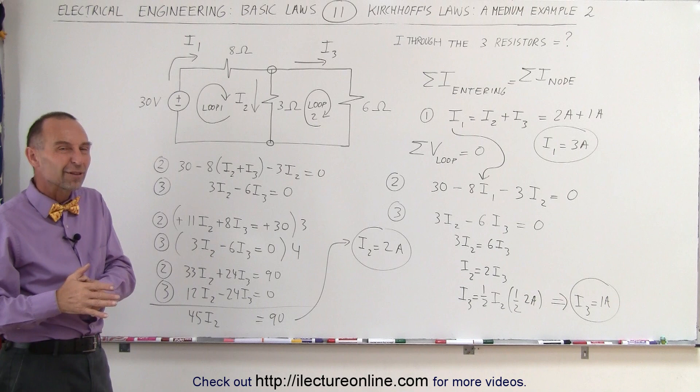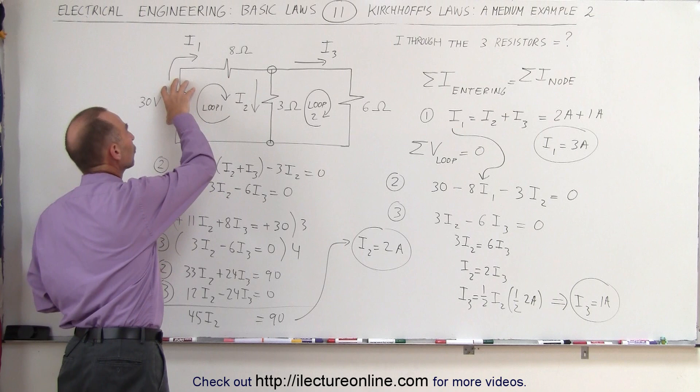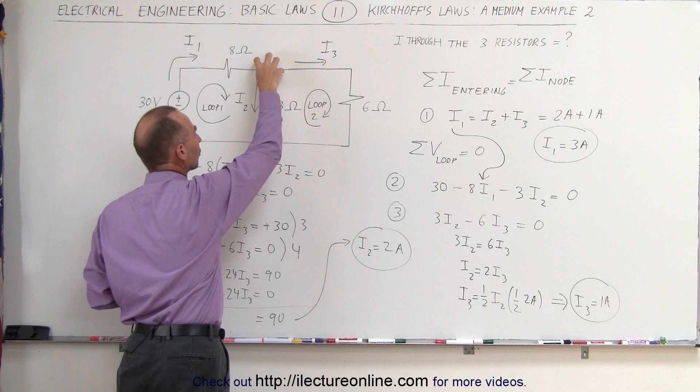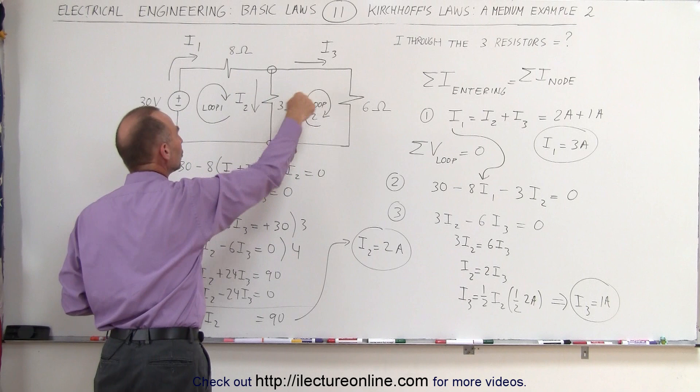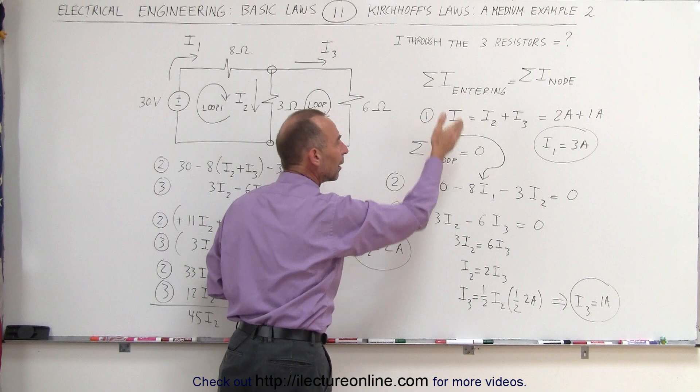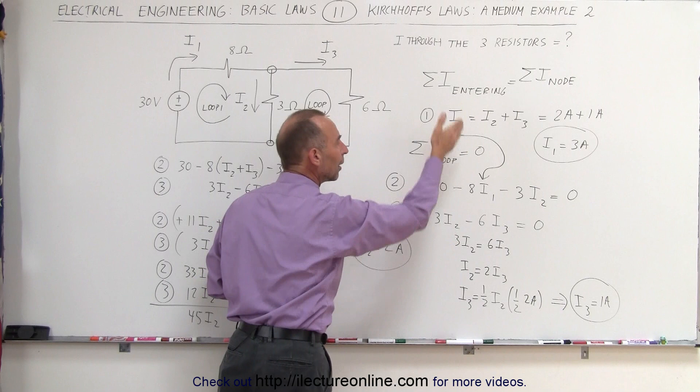This circuit could be solved in many different ways — probably easier than this — but it's a good illustration. We have a single voltage source and some resistors. We find a node, add all the currents entering and leaving it, and set them equal for our first equation. Then we go around two loops, adding up all the voltages around each loop to get equations 2 and 3. Solving those simultaneously gives us the current in each branch and each resistor. And that's how we do it.